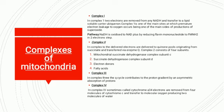In Complex 3, the Q-cycle contributes to the proton gradient by an asymmetric absorption of protons. In Complex 4, sometimes called cytochrome oxidase, electrons are removed from four molecules of cytochrome C and transferred to molecular oxygen, producing two molecules of water.